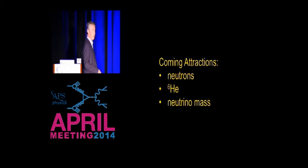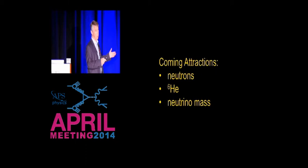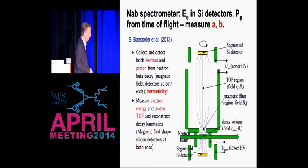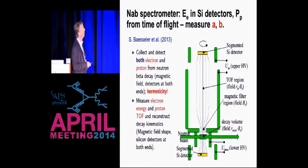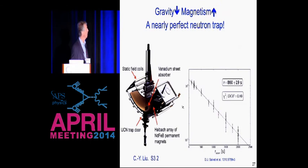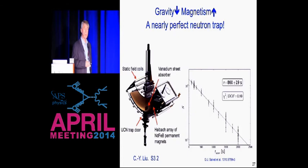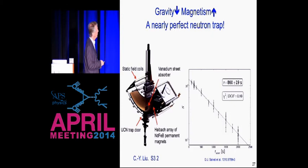Let me now turn to what I might call coming attractions. I'll talk briefly about neutrons and helium-6 and the neutrino mass. The neutron problem is being pursued very aggressively with this complicated magnetic spectrometer called NAB. This instrument is now being built and it will measure little a — the electron-neutrino correlation — and little b — the Fierz interference term. So this is going to be a measurement at the tenth-percent level, we hope.